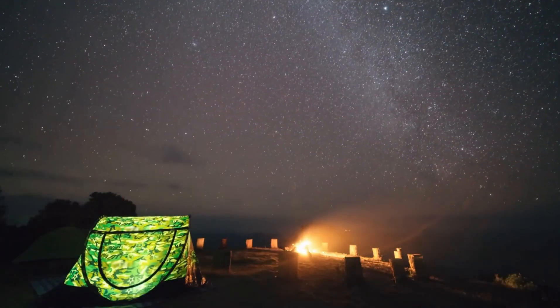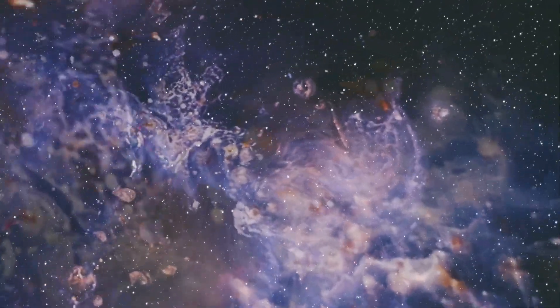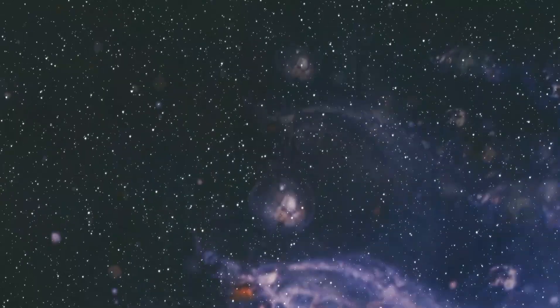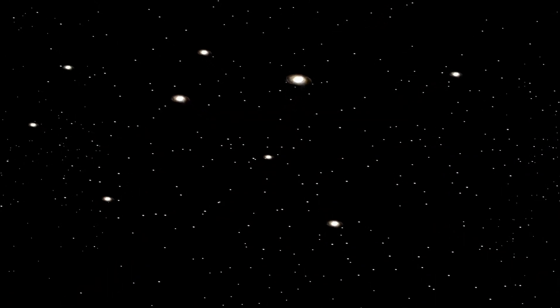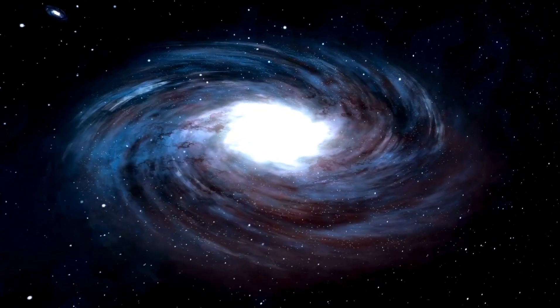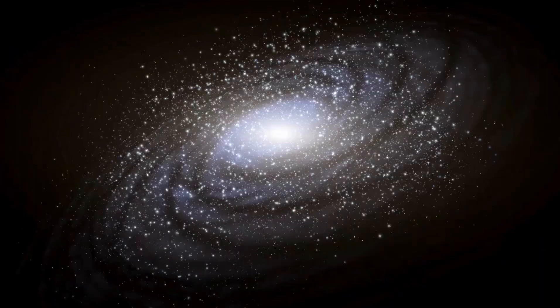Our universe holds countless exoplanets, coming in diverse forms and sizes. Some resemble massive gas giants like Jupiter and Saturn, while others are Earth-like. Among them, gas giants often called super-Jupiters dwarf even the largest planets in our solar system, and some orbit scorchingly close to their stars, earning the name hot Jupiters.